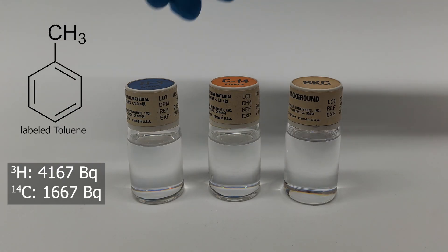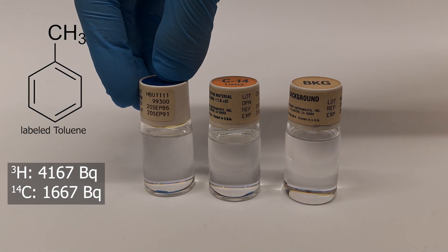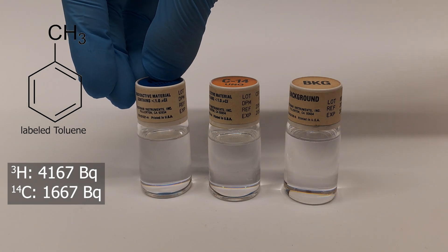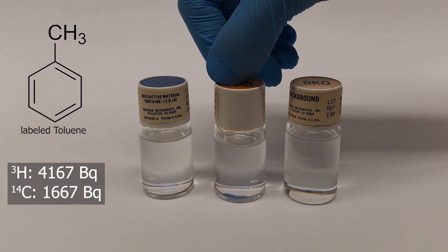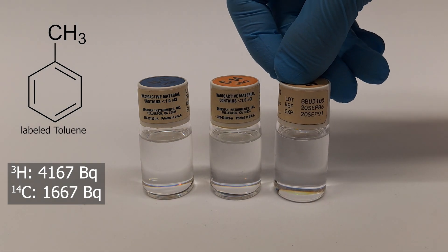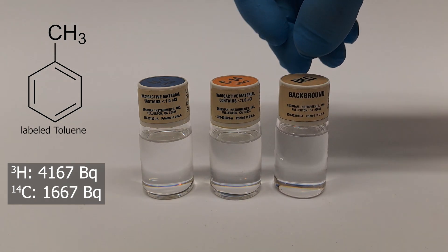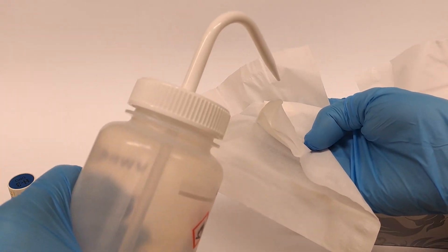4167 becquerels of H3 and 1667 becquerels of carbon-14 are contained in these 20ml solutions in the form of labeled toluene. So either the carbon in C7H8 is radioactive or the hydrogen is. The activity of hydrogen is now significantly lower, but I don't know when they were purchased, so I can't calculate that.